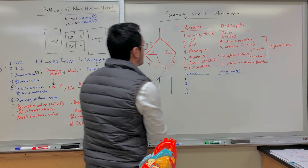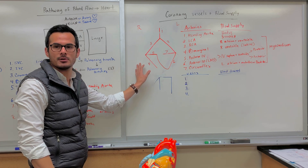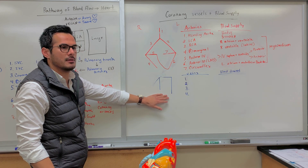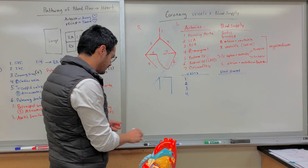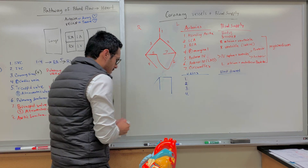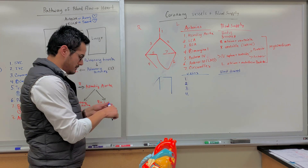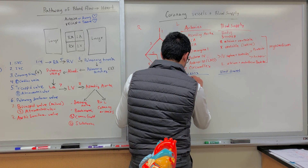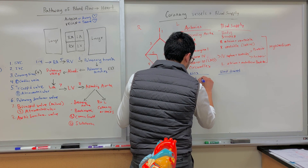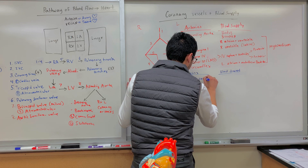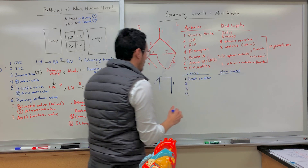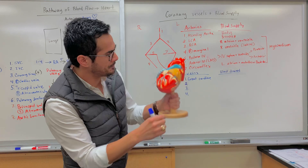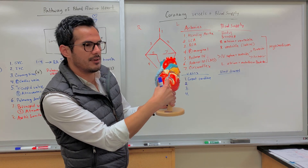That's it for the blood supply of the coronary vessels. The next thing we need to go over is the schematic of the veins. Number one is the great cardiac vein — this is the anterior view, and if you look at the heart, this is the great cardiac vein.